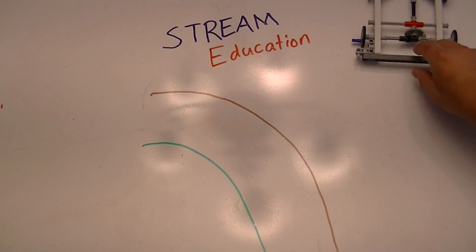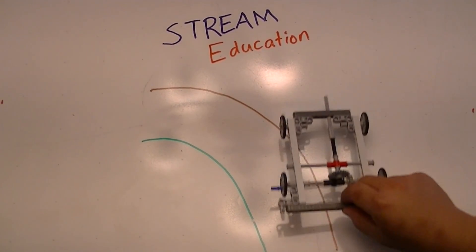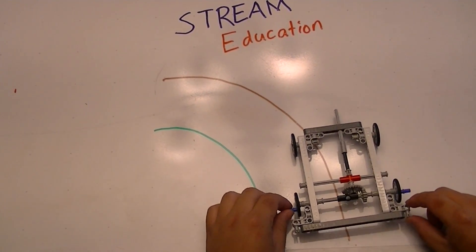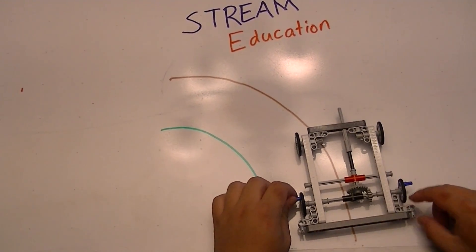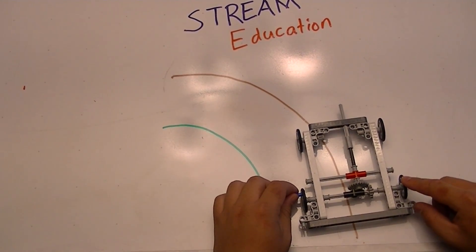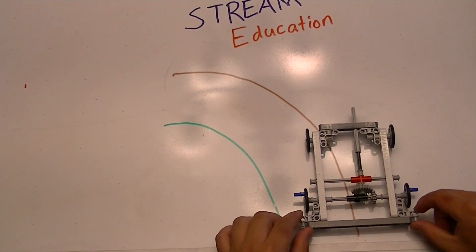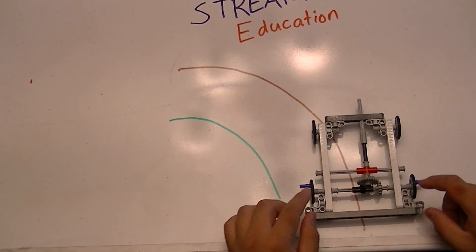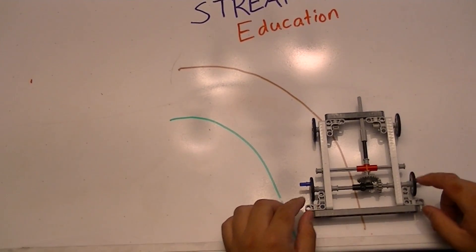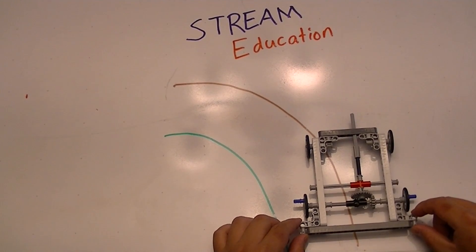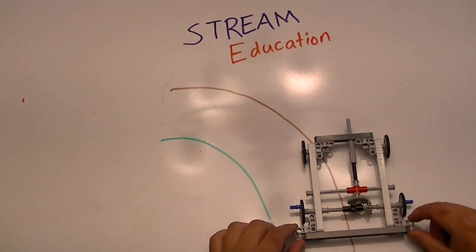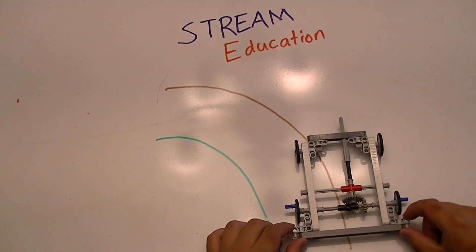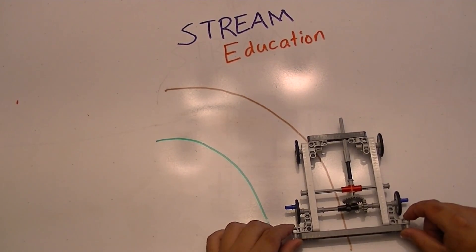Now let's take another look back at our primitive car. When I spin this wheel, this wheel must spin at the same rate. Now if I tried to force this car into a turn, what would happen is that one of these two wheels would lose grip and lose a lot of tire life. And if you think about how expensive tires are nowadays, you definitely don't want that happening.